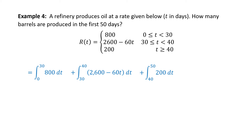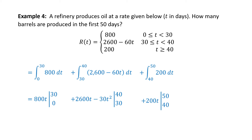Now let's find antiderivatives of each of the three integrals and evaluate. The antiderivative of 800 is 800T, evaluated from 0 to 30. For the second piece, the antiderivative of 2,600 minus 60T is 2,600T minus 30T squared (since 1 half times 60 equals 30), evaluated from 30 to 40. Finally, the antiderivative of 200 is 200T, evaluated from 40 to 50.